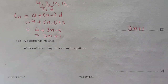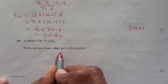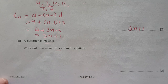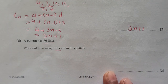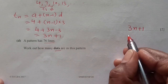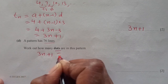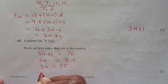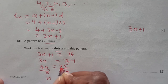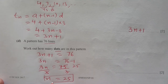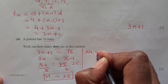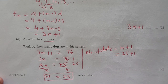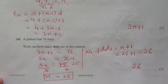Part C: Find an expression for the number of dots in pattern n. Dots = n + 1. For the number of lines in pattern n, using arithmetic sequence formula a + (n−1)d: first term 4, common difference 3, gives 3n + 1. Part D: A pattern has 76 lines. Using 3n + 1 = 76: 3n = 75, so n = 25. Number of dots = n + 1 = 25 + 1 = 26.